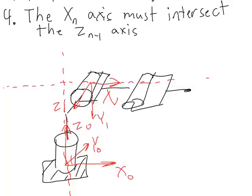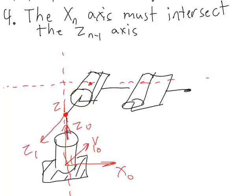What we have to do in a case like this is move the location of the center of frame 1 so that the x1 axis will indeed intersect the z0 axis. In this example, we can do that by moving the center of frame 1 from the center of the joint over to the location of this offset. We keep the axes in the same direction — we're just moving them over. I'll erase them where we drew them initially and draw them over here instead. We've now satisfied rules 1 through 4 for the first two joints of this manipulator.